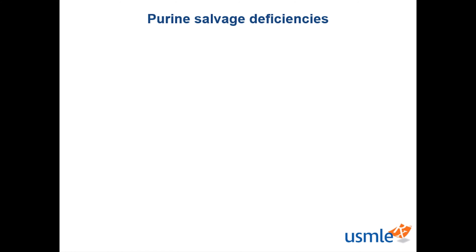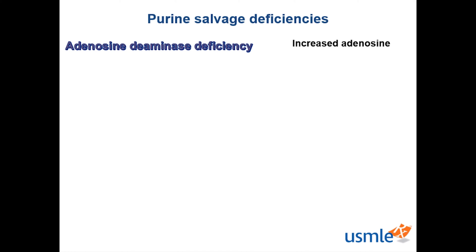There are two main purine salvage deficiencies you need to be aware of for your board exams. One is adenosine deaminase deficiency. If you don't have ADA, adenosine begins to accumulate. As is often the case in biochemical pathways, when you have a lot of product, it will inhibit the enzyme that's producing it, causing negative feedback. In this case, it inhibits ribonucleotide reductase. Ribonucleotide reductase reduces ribonucleotides, like in RNA, into deoxyribonucleotides, like in DNA, so it's required for the synthesis of all deoxyribonucleotides.